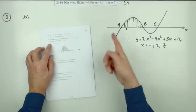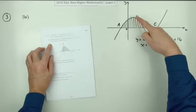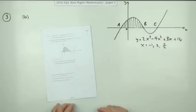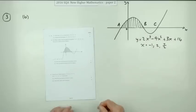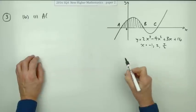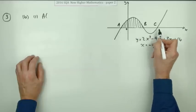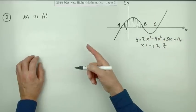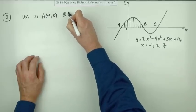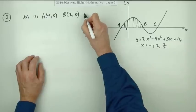For part b, the diagram shows the graph of the equation from part a, with the curve cutting the x-axis at three points A, B, and C. The question asks for the coordinates of A and B. From the three solutions in numerical order — negative one, two, and seven over two — A is the point (negative 1, 0) and B is the point (2, 0), since 7 over 2 is 3.5 and therefore larger than 2.